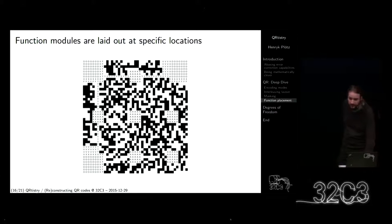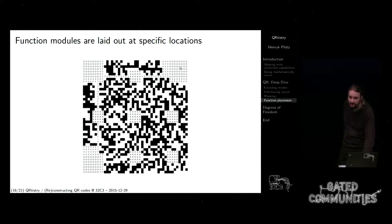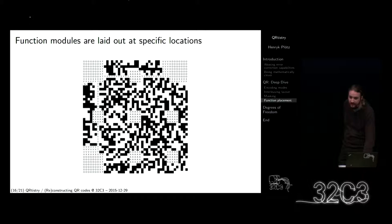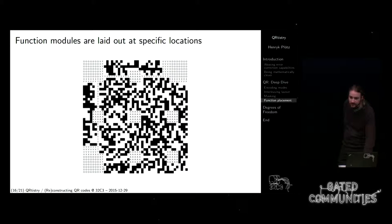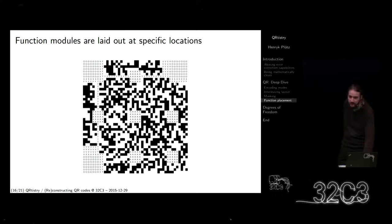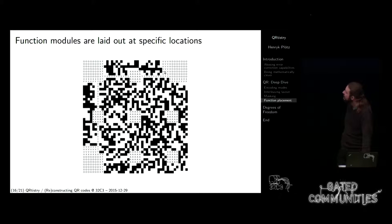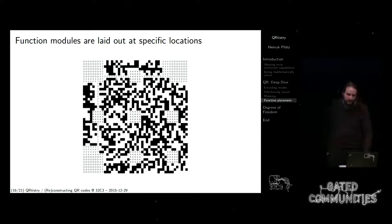Hier ist nochmal ein Debug-Output von meinem Programm, der zeigt, wo die Funktionsmodule sind — also die Findermuster, die Ausrichtmuster in den Ecken, dann die Format-Informationen, das sind die Fs hier. Es gibt eine zweite Kopie weiter hier unten und drüben. Also selbst wenn man die Ecken nicht findet, ist es immer noch in Ordnung. Es gibt Versionsinformationen hier und dort — selbst wenn man eine dieser Ecken abschneidet, ist man immer noch in Ordnung. Und hier sind die Ausrichtmuster und das Timing-Pattern.